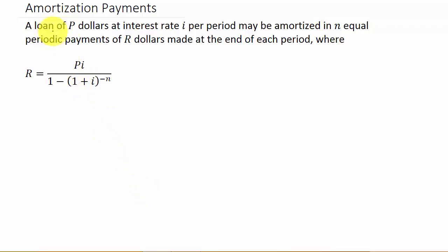P is the loan amount. Notice this i here - i equals R over m. R is your interest rate, that's different. i is your interest rate per period. R is just the interest rate on the loan. m is how many times it's compounded per year.